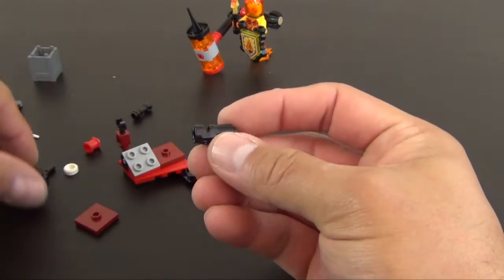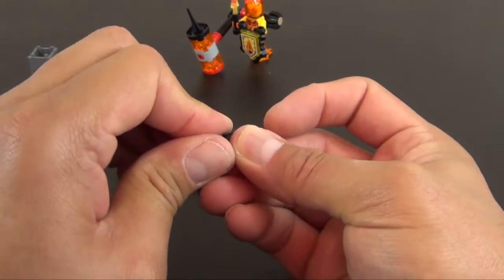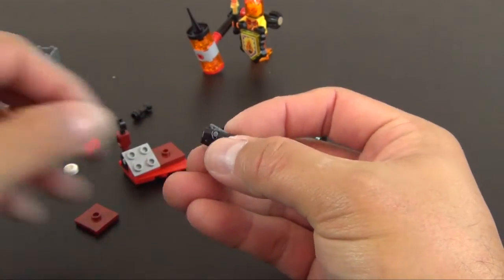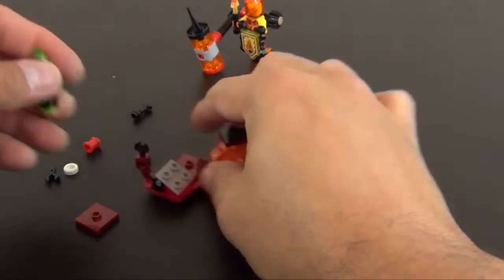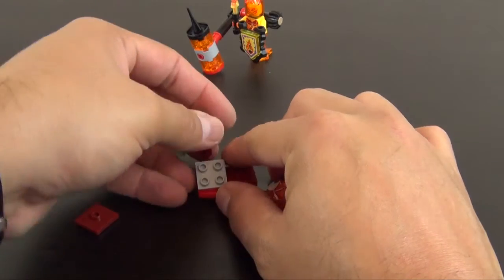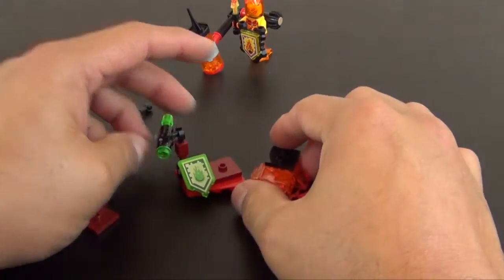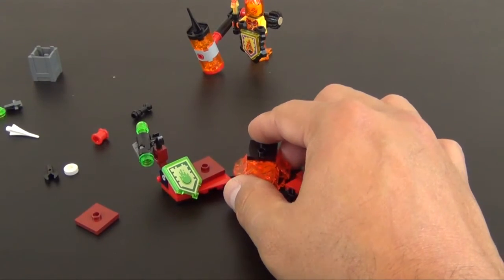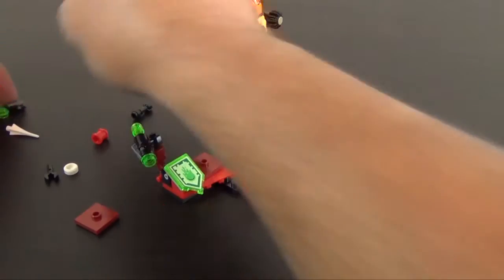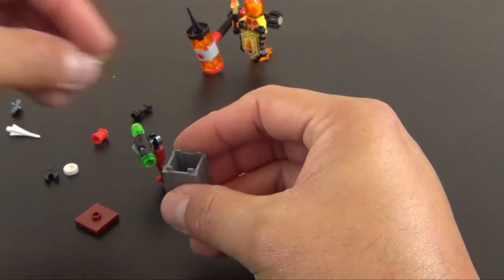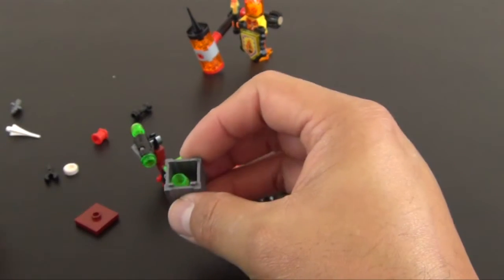So now we have a stud launcher gun. It's going to have the green, fluorescent green, neon green, whatever you want to call it. We've got the little tile that looks like a slime ball.